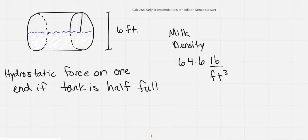So we have a cylindrical tank that is six feet in diameter, but it's only half full of milk. The density of milk is 64.6 pounds per cubic foot, and we want to find the hydrostatic force on one end.